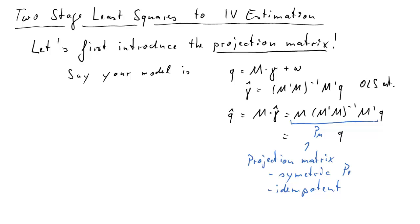It is symmetric and idempotent. What does that mean? It means that Pm is equal to Pm prime. And idempotent means that Pm times Pm is nothing else but Pm. So what we established here is basically how we get from q to q hat, and that's intermediated with this projection matrix.